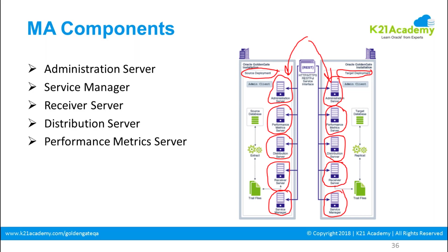Service Manager sits on top of your administration server. The Receiver Server collects the changes being sent over the network — it acts as a kind of collector process. It receives changes sent over TCP/IP network to the target. Distribution Server distributes the data over TCP/IP network. You define the local trail path and configure data from the pump process in the distribution server.